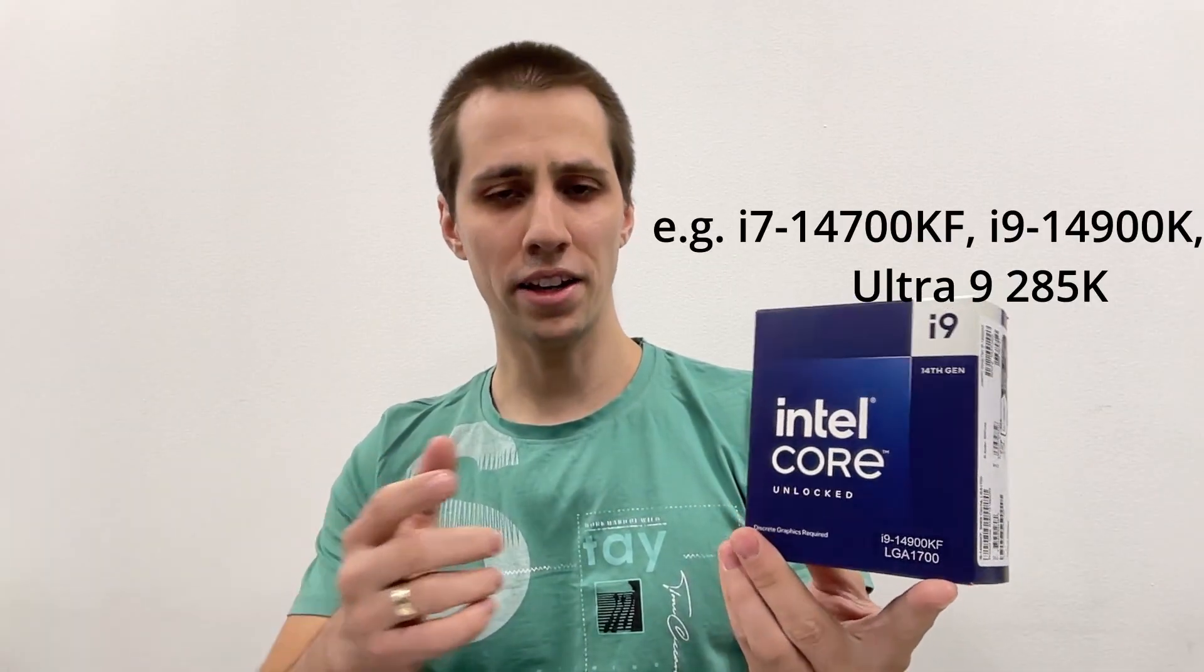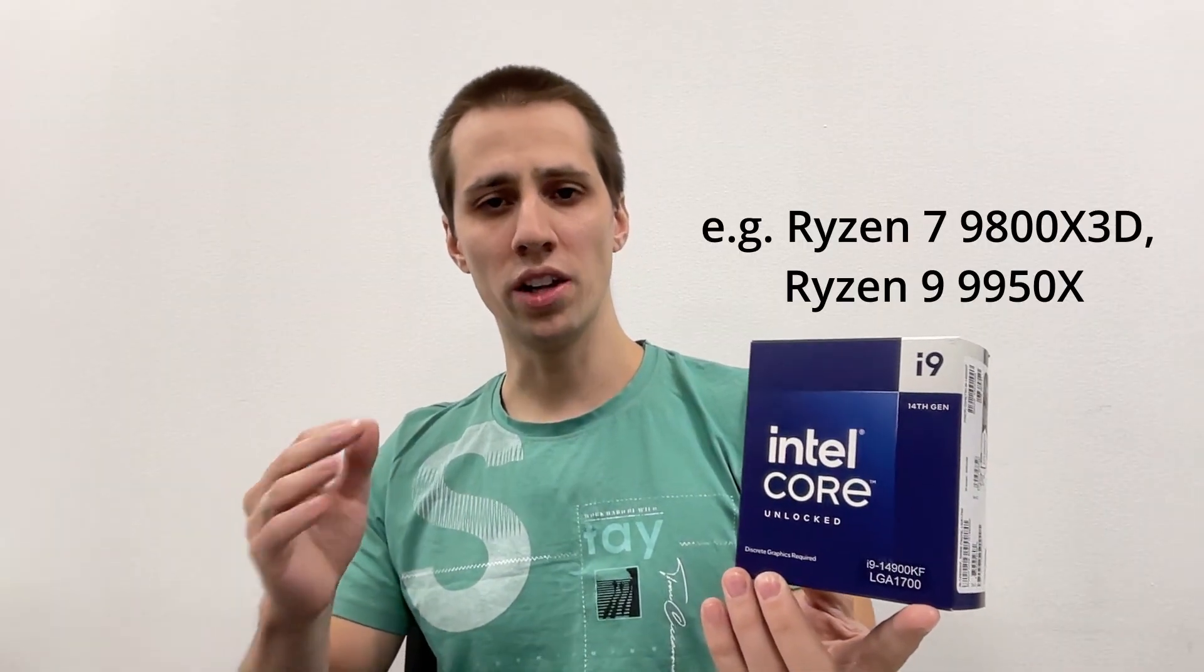Box refers to a CPU that comes sealed from the factory and includes a stock cooler in the package. AMD also uses the term PIB, which basically means the same thing. Some processors, like Intel's K and KF series or AMD's X and X3D chips with unlocked multipliers, are usually sold without a cooler since they require a more capable one anyway.